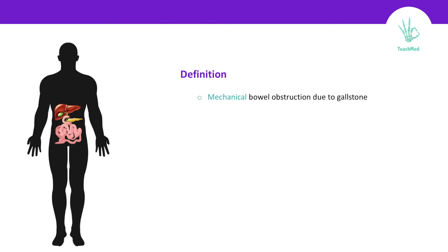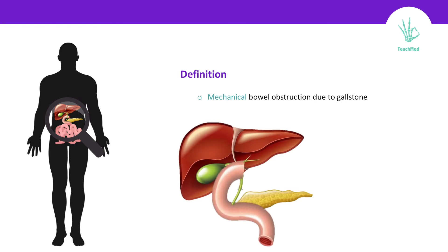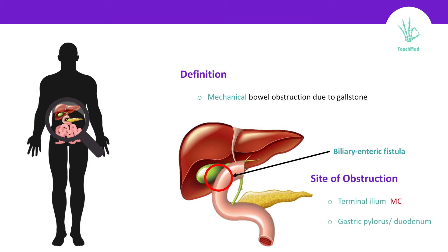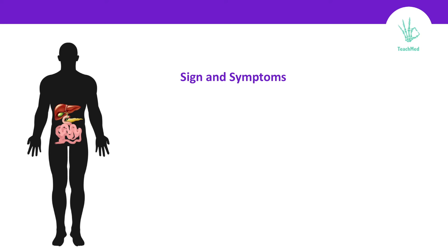Gallstone ileus means the mechanical obstruction because of a gallstone. The green indicates the gallbladder, and next to it is the small bowel — or to be more specific, the duodenum. If there is for some reason a fistula or an opening between the gallbladder and the small intestine — we call it a biliary-enteric fistula — the gallstone can find its way from the gallbladder into the small bowel. There it will have two destinations: either it goes backward or forward. If it went forward it will get stuck in the terminal ileum, which is the most common site of obstruction. If it went backward it can get stuck in the gastric pylorus or the duodenum.